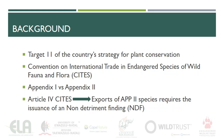Species on Appendix 2 may be traded with the issuance of an export permit from the country of export. Article 4 of the CITES regulations advises that export permits should be granted so long as the export is not detrimental to the survival of the species in the wild. This is assessed through the undertaking of a non-detriment finding, or NDF.